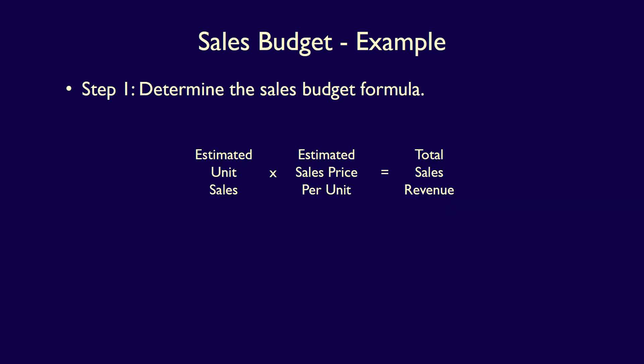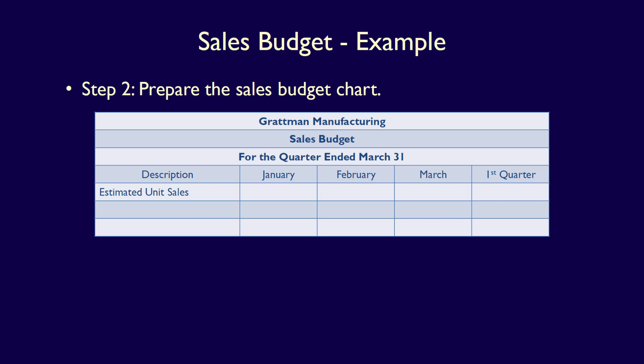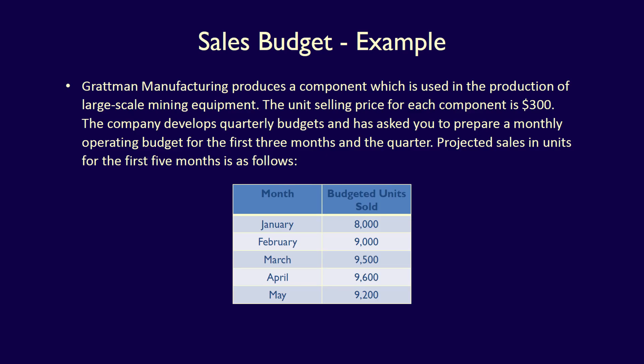We can now use our formula from step one: estimated unit sales multiplied by estimated sales price per unit is equal to total sales revenue. We apply that to our chart in the description column. Estimated unit sales is in the first row, estimated sales price per unit is in the second row, and total sales revenue is in the third row. We fill in the estimated units sold — also called budgeted units sold — January: 8,000, February: 9,000, and March: 9,500.